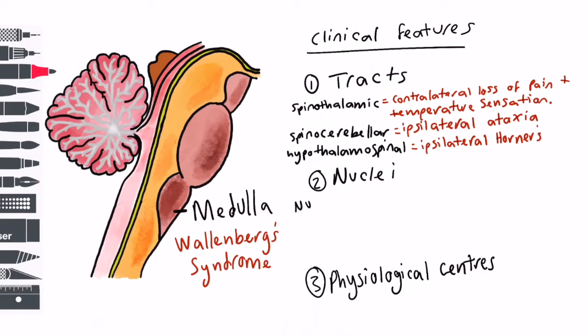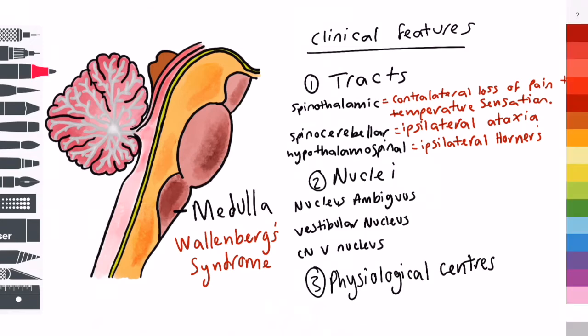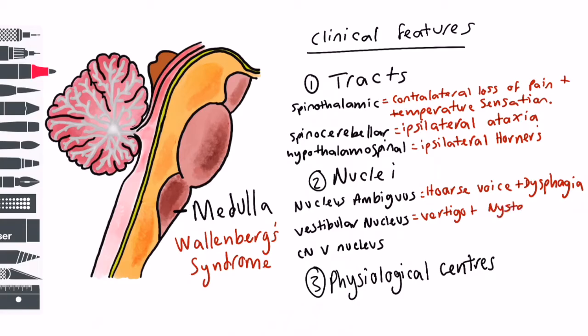In Wallenberg syndrome there are three main cranial nerve nuclei that are affected: the nucleus ambiguus, the vestibular nucleus, and the cranial nerve 5 nucleus. Nucleus ambiguus is associated with the glossopharyngeal and vagus nerves and thus damage results in a hoarse voice and dysphagia. Damage to the vestibular nucleus can cause vertigo and nystagmus. Damage to the cranial nerve 5 nucleus results in ipsilateral facial loss of temperature and pain.